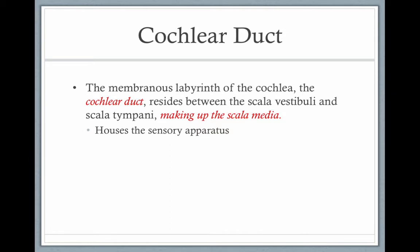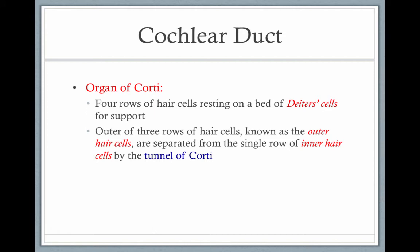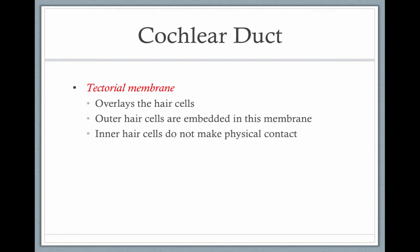The membranous labyrinth of the cochlea — the cochlear duct — resides between the scala vestibuli and the scala tympani, and that makes up the scala media, which houses the sensory apparatuses. The basilar membrane forms the floor of the scala media and separates the scala media from the scala tympani, and that's where the organ of Corti sits. The organ of Corti is four rows of hair cells resting on a bed of Deiters' cells for support. There are three rows of outer hair cells and a single row of inner hair cells by the tunnel of Corti.